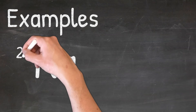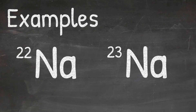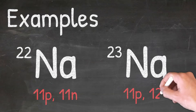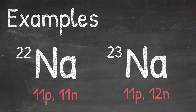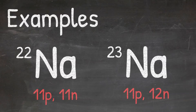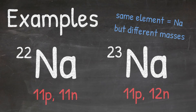Let's take a look at a few examples. Here we have sodium-22 and sodium-23. We know that sodium-22 will have 11 protons and 11 neutrons, while sodium-23 will have 11 protons and 12 neutrons. Sodium-22 has 11 protons because of the atomic number from the periodic table. The mass number is 22 because that's the number we see in the top left corner, so we need 11 neutrons for the mass to be 22. For sodium-23, the only difference is the mass changes from 22 to 23. The element stays as sodium, which is why both have 11 protons, and in order for the mass to be 23, we need 12 neutrons. These represent isotopes because we have the same element, sodium, but they have different masses — one has a mass of 22 and one has a mass of 23.